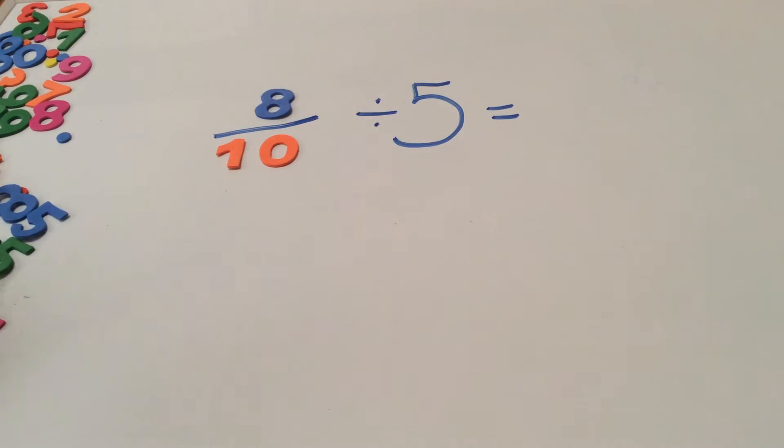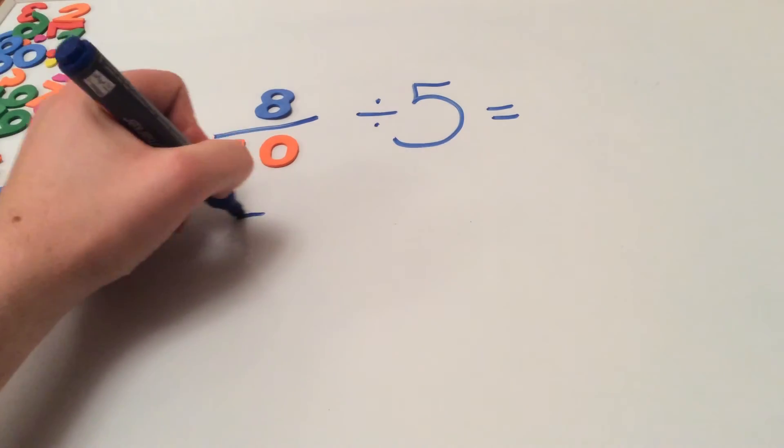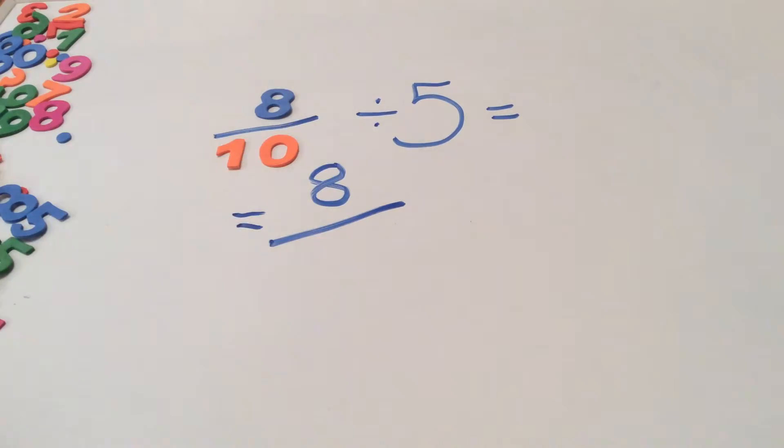Our final calculation is 8 tenths divided by 5. So step 1 as we said before the numerator stays the same. So the numerator in our answer is 8.